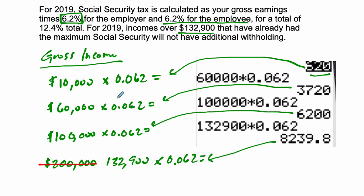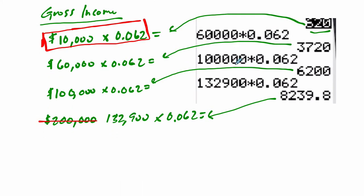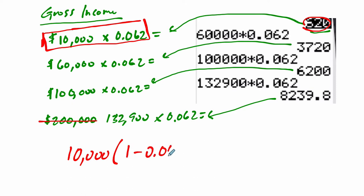Another question you might ask is: what remains? What's left of your gross income? So let's do one example — we'll do the first one. We're taking away a small percentage from 100%. So if I want to know in one step how much money I would have left, I could do 10,000 multiplied by 0.062, which is 620, and then subtract 620 from 10,000. Or I could just do it like this: 10,000 times 100% minus 0.062.